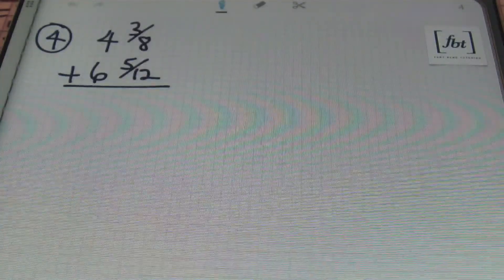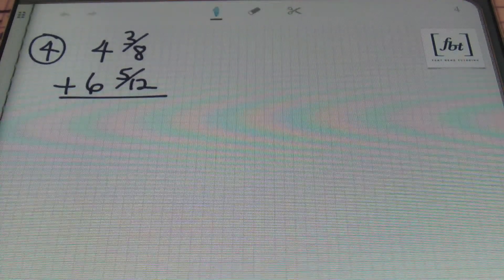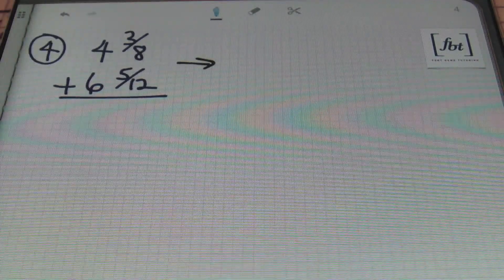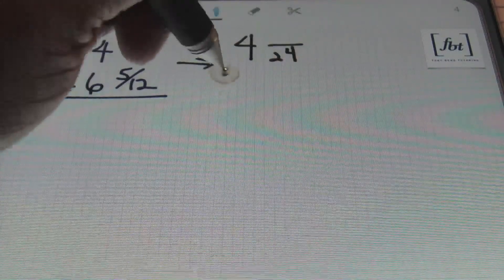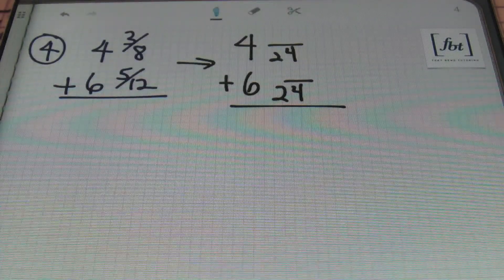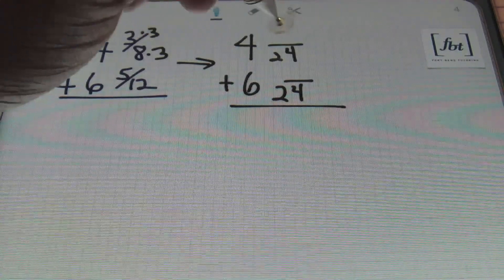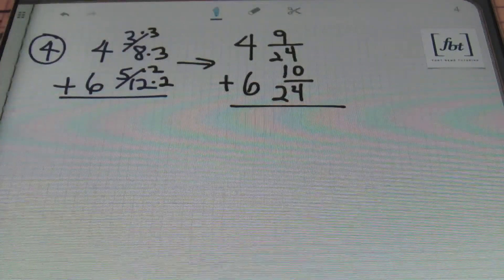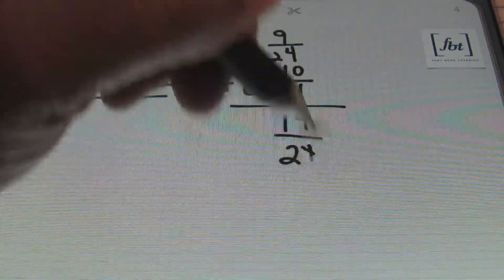Alright moving along. We have 4 and 3/8 plus 6 and 5/12. Once again you always want to have a common denominator before you do anything else. So what's the first number that 8 and 12 can go into evenly? You guessed it. 24. 24. So I have 4 with a denominator of 24 here. I also have 6 with a denominator of 24 here as well. Alright. So what happens next? We need to get equivalent fractions. So 8 was multiplied 3 times to get 24 so 3 times 3 gives me 9. 12 was multiplied twice so 5 times 2 gives me a result of 10. And then I'll go ahead and add my numerators together. 9 plus 10 is always 19 over the denominator of 24 in this case.